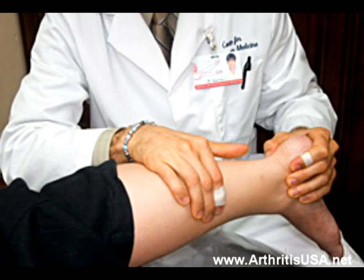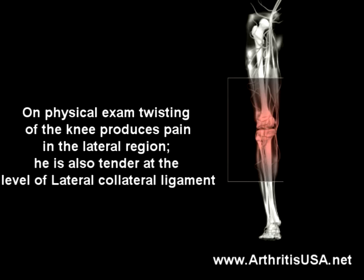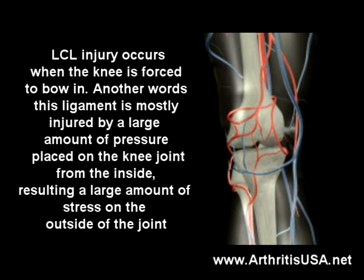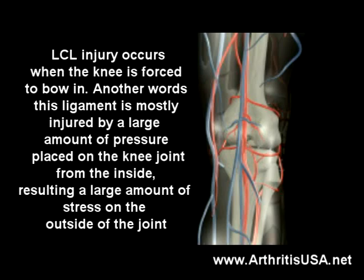On physical examination, twisting of the knee produces pain in the lateral region, and it is also tender at the level of the lateral collateral ligament. Lateral collateral ligament, or LCL, injuries occur when the knee is forced to bow in — that is, when a large amount of pressure is placed on the knee joint from the inside, resulting in large stress on the outer aspect of the knee.